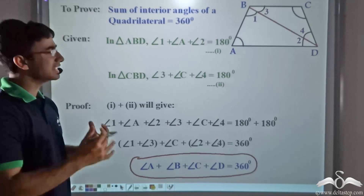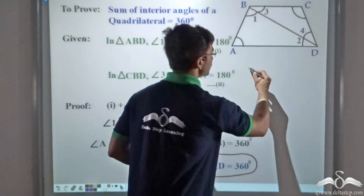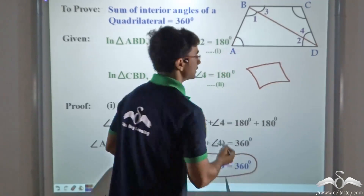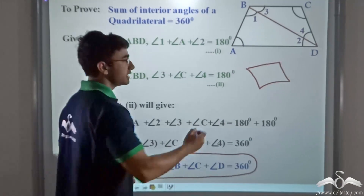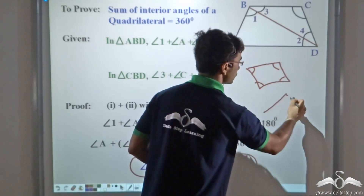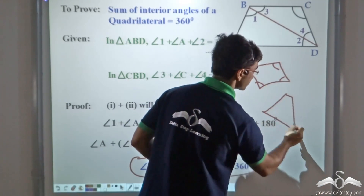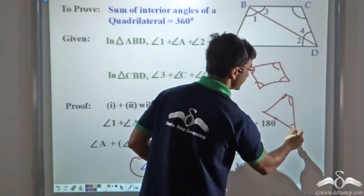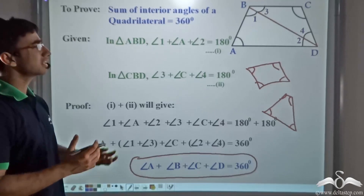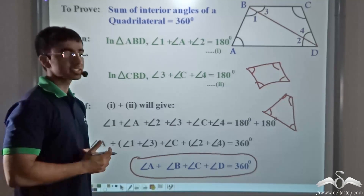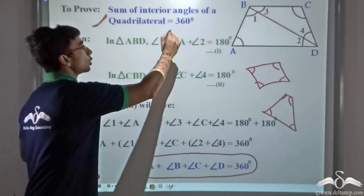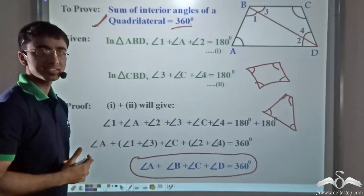And this is true for any quadrilateral. If you have a quadrilateral like this, the sum of interior angles will be equal to 360 degrees. Even if you have a quadrilateral like this, the sum of interior angles will be equal to 360 degrees. So no matter what kind of quadrilateral it is, the sum of interior angles is always equal to 360 degrees.